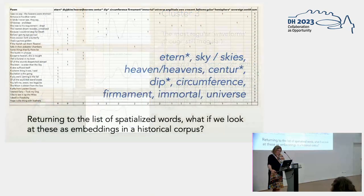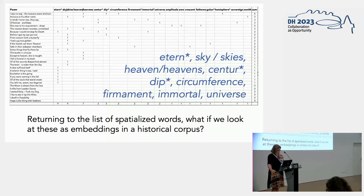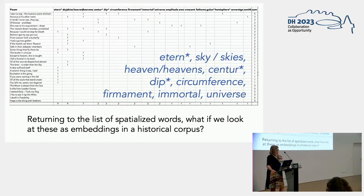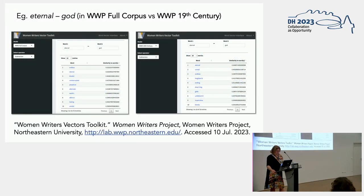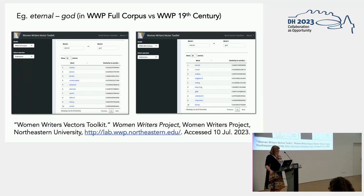Just one final experiment: I said I would return to this list of spatial terms, and I wanted to see how these worked in terms of embeddings in historical corpora. So I took this list of terms to the Women Writers Project vector toolkit. Here's an example of what happened if we take the vector for 'eternal' and do some vector mathematics on it and take away 'god' — taking something that normally connotes expansiveness in time rather than space and then removing the religious sense — essentially attempting to secularize its meanings, which is what Dickinson is doing in her poetry.